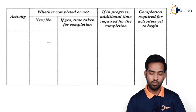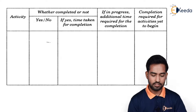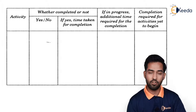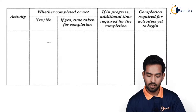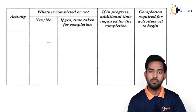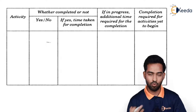In the form, we fill in: whether each activity is completed — yes or no. If yes, the time taken to complete that particular activity. Then event progress — additional time required for completion of the particular activity. Then what completion is required for activities yet to begin. All this data we have to fill in this particular form for all the activities performed and which we have to perform in future.